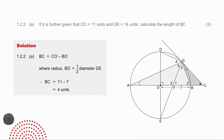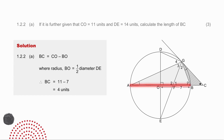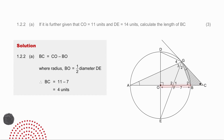In the next question, they give you that CO is 11 units and DE is 14 units. DE is a diameter, so if DE is 14 units, it means that AB, which is also a diameter, is also 14 units, which means that OB, which is a radius, is 7 units. OC is 11, OB is 7, which means BC must be 4 units.